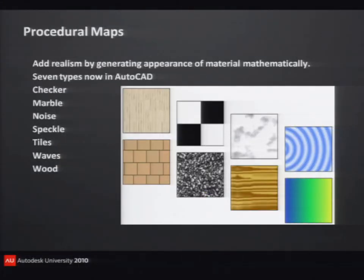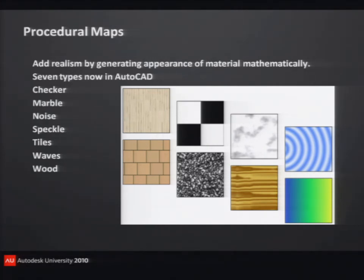AutoCAD has another type of material called procedural maps. This uses mathematics to create different types of effects like checker, marble, wood, a speckle — which is great for granite — tiles, weave, or waves.